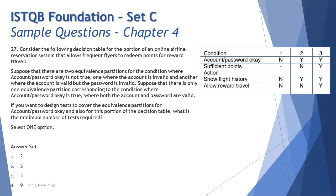They're giving you a hint: assume that the first category where account or password okay is 'no' is broken down into two sub-categories — what if you don't have an existing account, or what if you have an account but don't remember your password. Cases two and three remain the same. The question further states there is only one equivalence partition corresponding to conditions where account or password okay is true — meaning for cases two and three, there's just one partition.